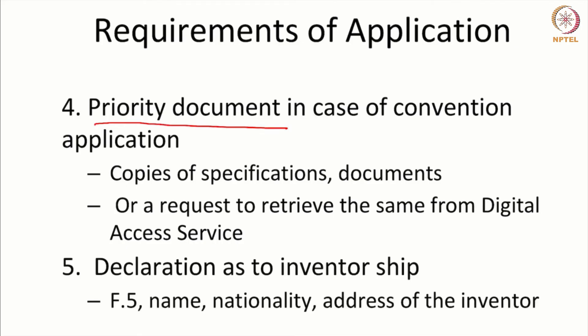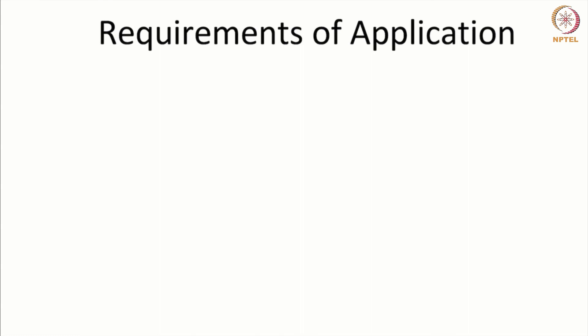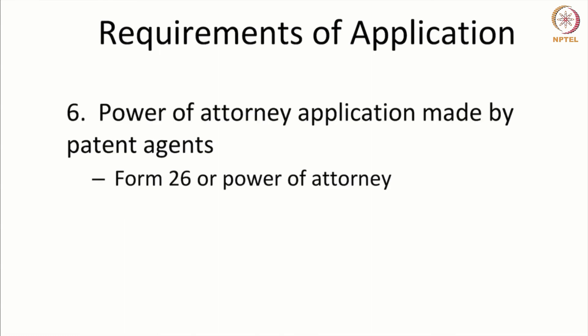There has to be a declaration with regard to inventorship — as to who the inventor is, the name, nationality, and address of the inventor. Then a power of attorney has to be filed, or Form 26 instead of the power of attorney, authorizing the patent agent to deal on your behalf.